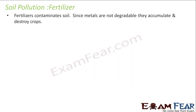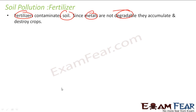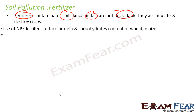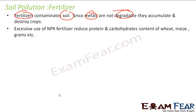Let's understand how fertilizers impact soil. Fertilizers actually contaminate soil — they are made of metals, they are non-degradable, and they accumulate over a period of time and destroy crops. Excessive use of NPK fertilizer reduces the protein and carbohydrate content of wheat,